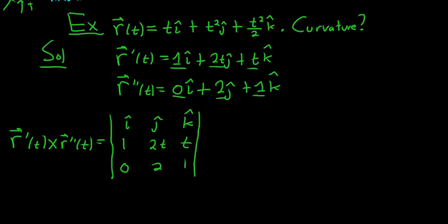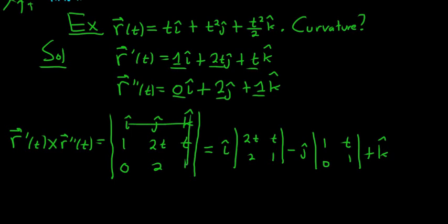And we'll call the cross product formula is plus minus plus. The first one is plus, so we have our i. And then we cross out the corresponding row and column. We cross out the first row and first column, so we get 2t, t, 2, 1. Then it's minus j. Then we cross out the first row and second column, so we're left with 1, 0, t, 1. And then finally plus k. So you cross out the row and column, we're left with 1, 2t, and then 0 and 2.